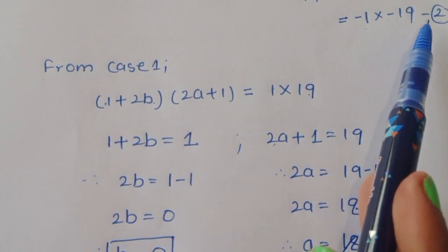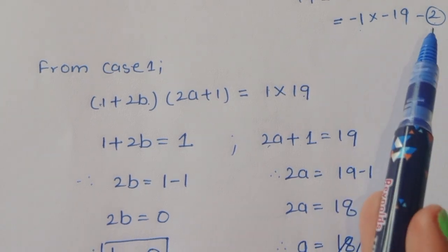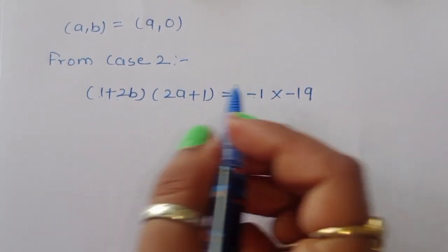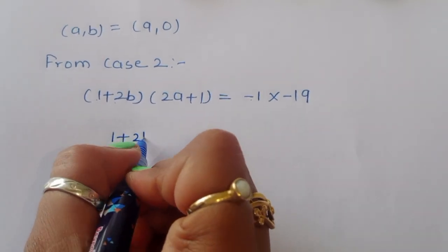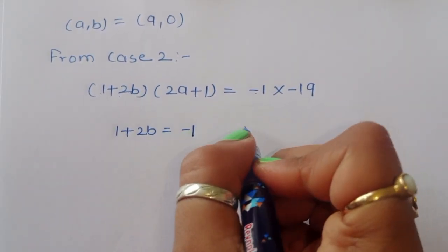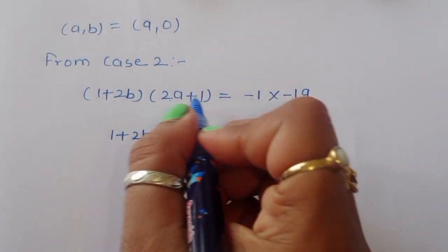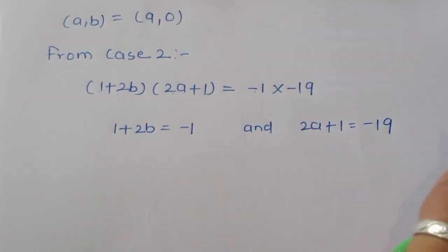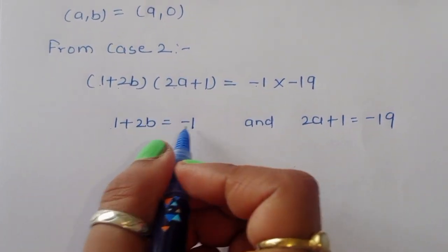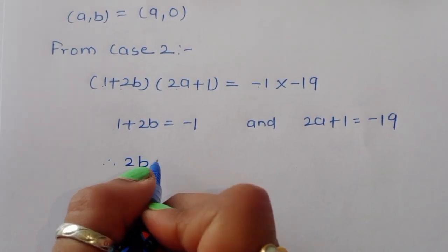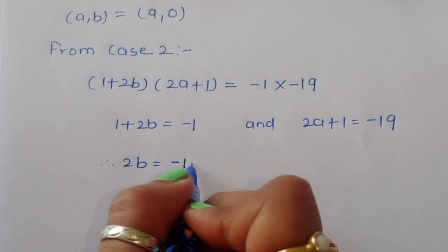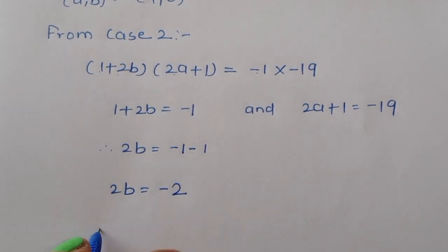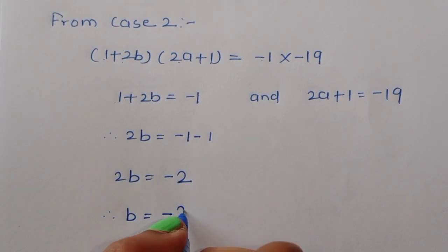Now for Case 2: (1 plus 2b) times (2a plus 1) equals minus 1 times minus 19. So 1 plus 2b equals minus 1, giving 2b equals minus 2, therefore b equals minus 1. And 2a plus 1 equals minus 19.